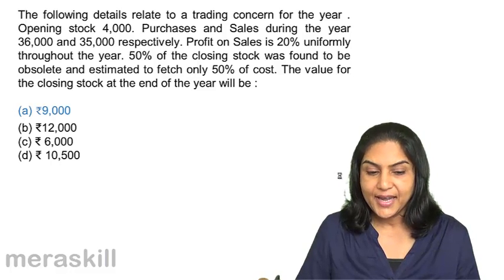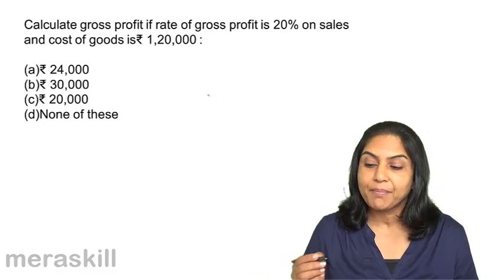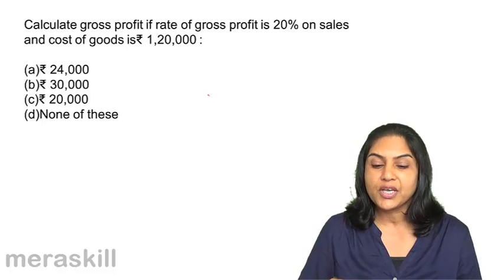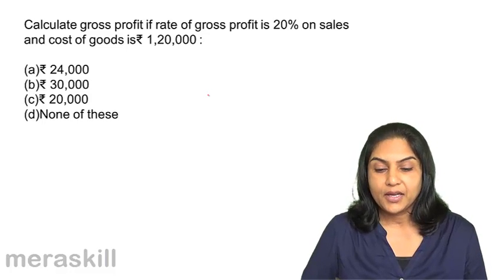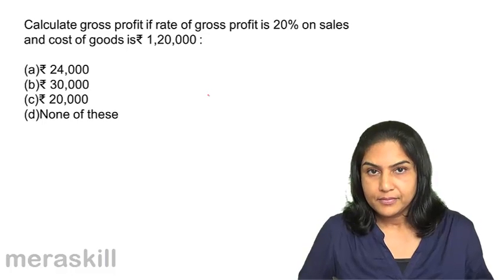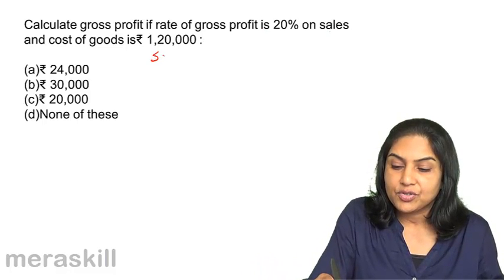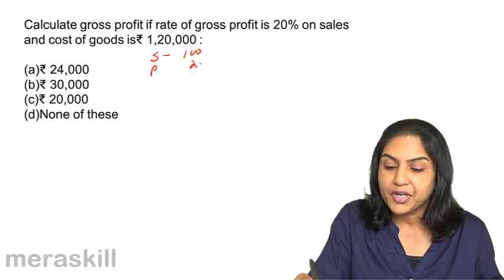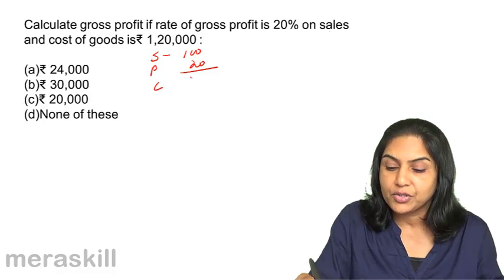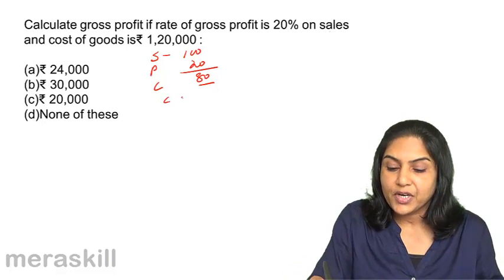Next: Calculate the gross profit if the rate of gross profit is 20% on sales and cost of goods is 1,20,000. Options: a) 24,000, b) 30,000, c) 20,000, d) none of these. Since GP is 20% on sales, sales is 100, profit is 20, therefore cost is 80.